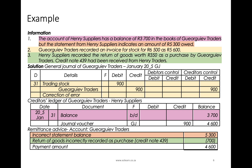Henry Suppliers recorded the return of goods worth $350 as a purchase by Georgia of Traders. Credit note 439 had been received from Henry Traders, meaning they are happy to give that allowance. However, they've simply calculated and entered it incorrectly, so we need to let them know they've made a mistake. Because they've treated it in the opposite way of what they should have, we're going to double the amount — the $700 is in fact $350 first subtracted to correct the error, then subtracted again to enter the transaction as it should be. At the end of the day, you can check your creditor's ledger balance and the amount in your remittance advice, and they should be exactly the same.